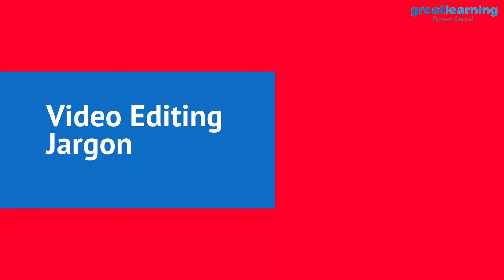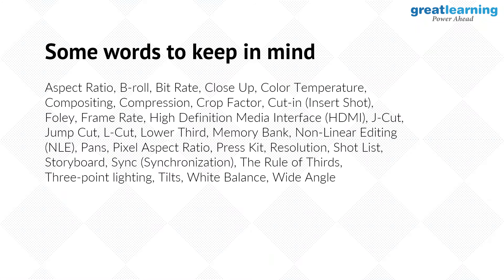Now we come to video editing jargon — many words you need to keep in mind when you begin editing. When working in a group, each person needs to understand what the other is saying. The first term is aspect ratio, which relates to the width and height of your video. Those dimensions are expressed through a ratio. Most common examples are 4:3, which is your television ratio, 16:9 which is your HD ratio, and 1.85:1. Even 4K has its own ratio of 16:10.